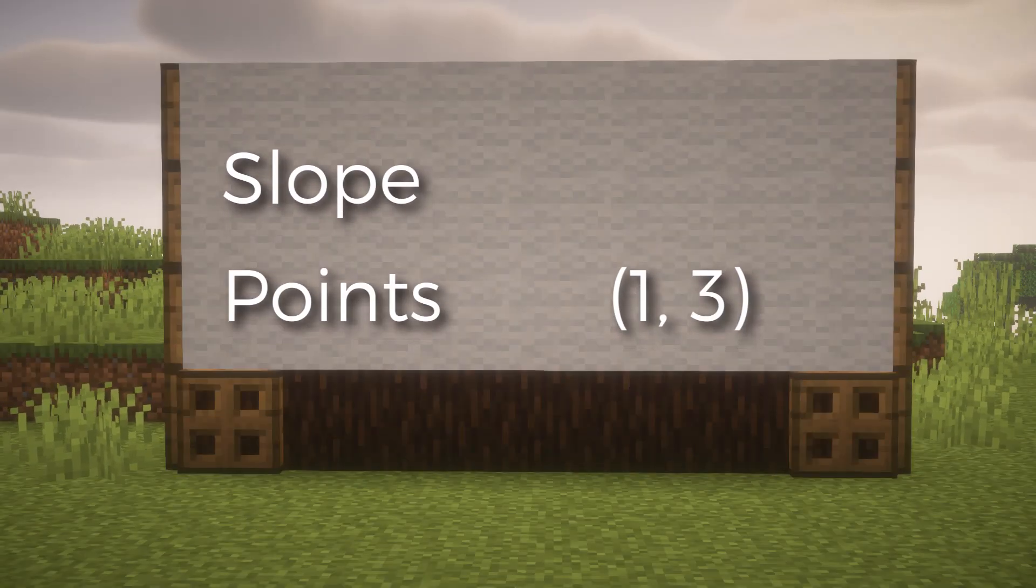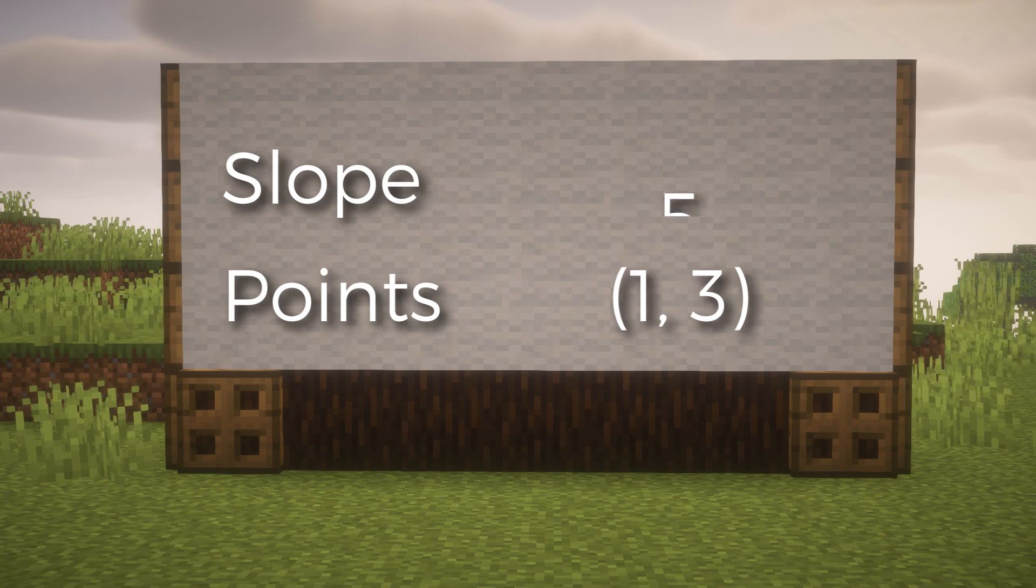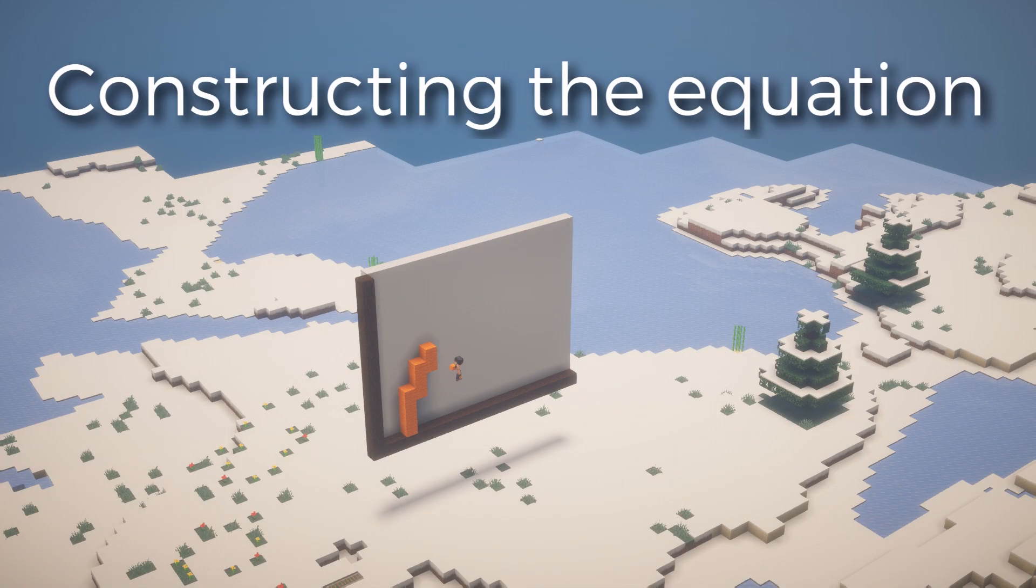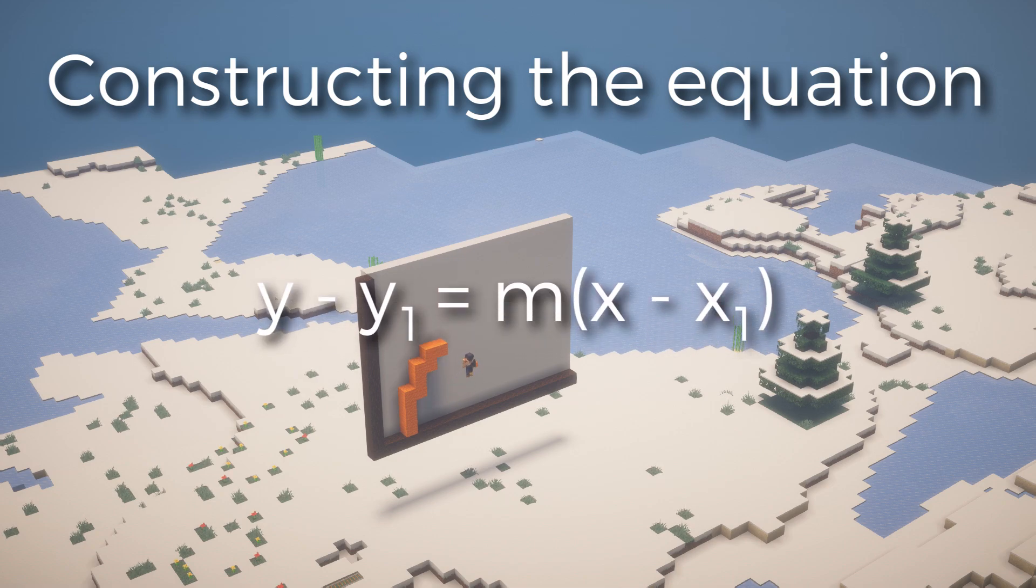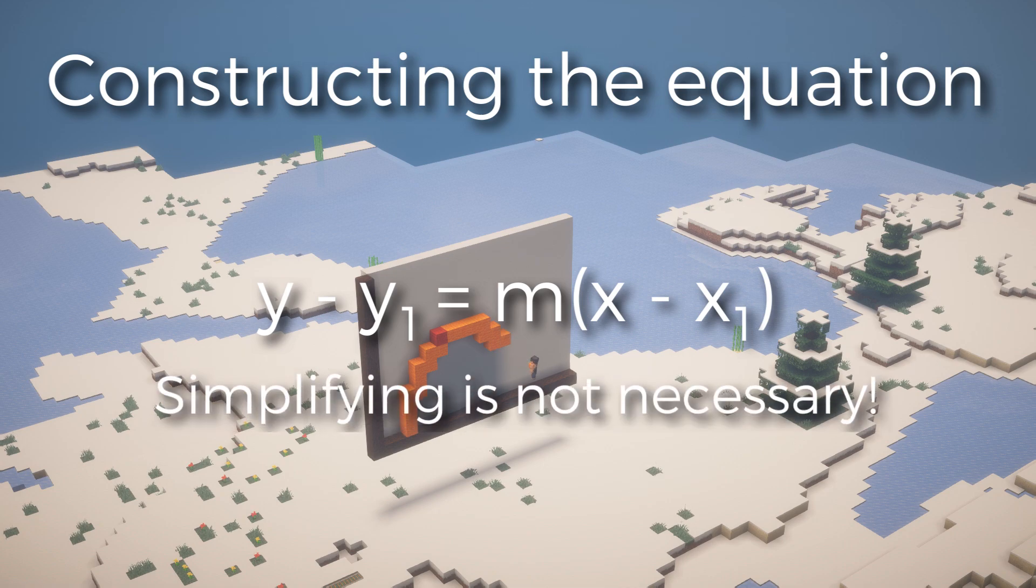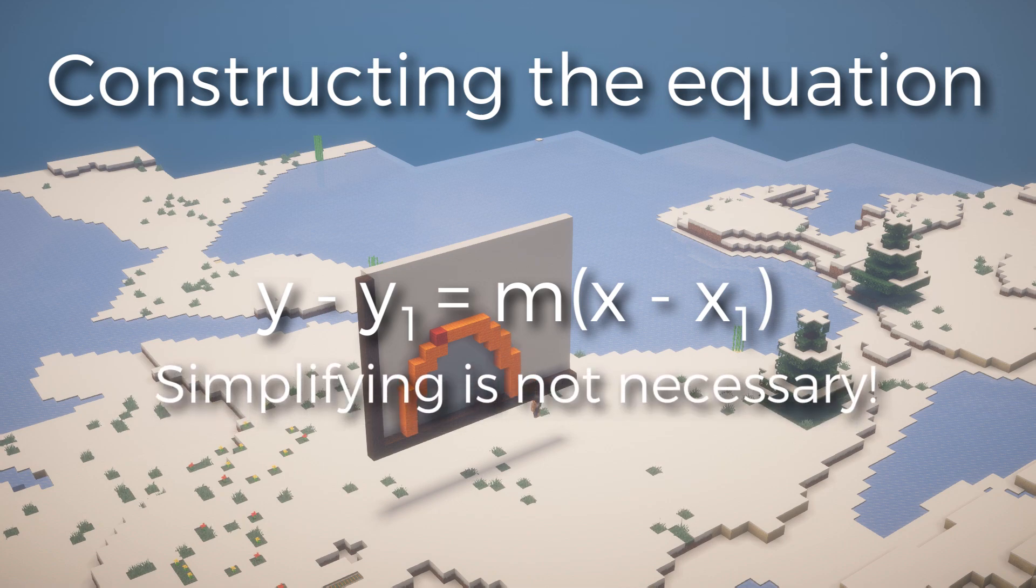So now we have a set of points, 1, 3, and our slope of 5. So our very last step involves constructing the equation, which this time will not be using the slope-intercept formula, but the point-slope formula. This is because it allows us to plug in every single value without having to change anything, and during exams, you will not have to simplify this.